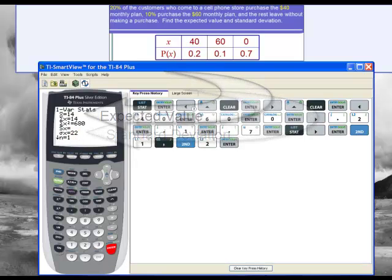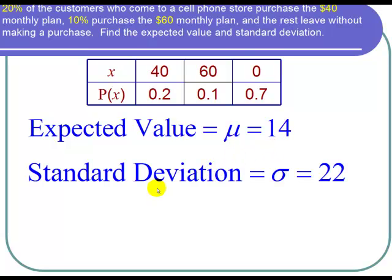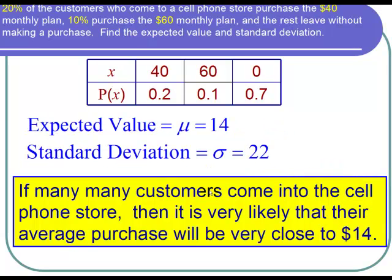So let's get back to the question screen and recall that the calculator gave us the expected value which we call μ is 14 and the standard deviation which we call σ is 22. So now let's interpret the expected value. What we can say is that if many many customers come into the cell phone store then it is very likely that their average purchase will be very close to $14 per customer. And I'm done with the problem.